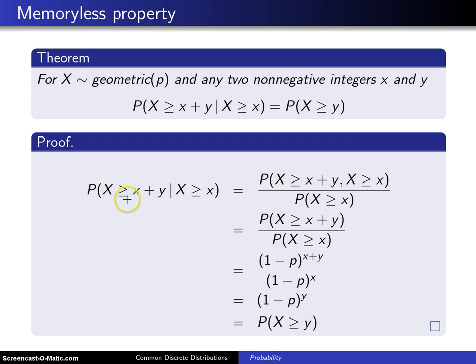So the probability X is greater than or equal to x plus y, given X is greater than or equal to x, is the same as the probability of one event given another. And you know that the probability of A given B is the probability of A and B, and the intersection here is going to be denoted by a comma, that means and, divided by the probability of B.